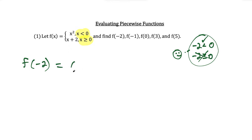Since negative two is less than zero, we're going to plug in x equals negative two to this part of the function. So we're going to have negative two in parentheses squared, and negative two squared is four. So that's the value for f of negative two.